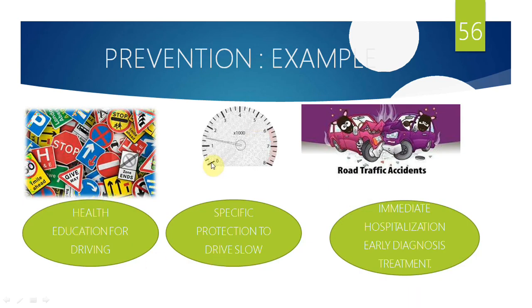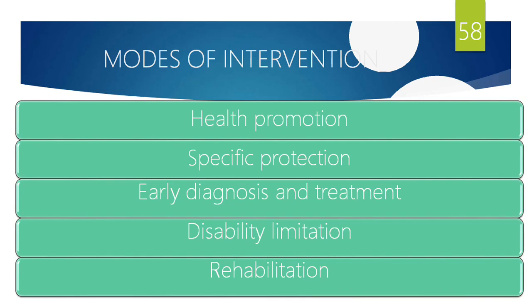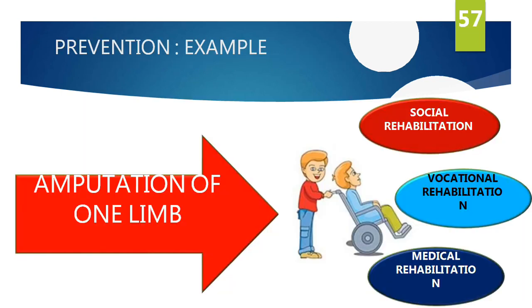To summarize: primary prevention teaches people to prevent accidents; secondary prevention intervenes after an accident as early as possible to minimize complications; tertiary prevention deals with the full effect of complications through rehabilitation. Primordial and primary are true prevention; secondary and tertiary are management of disease complications. Next class will cover modes of intervention — how to apply these levels of prevention in practice.